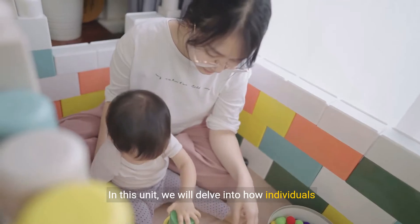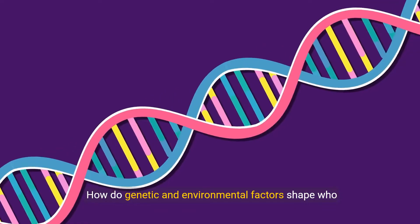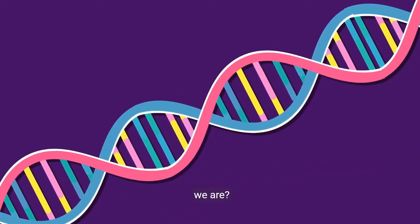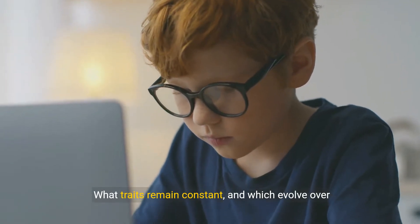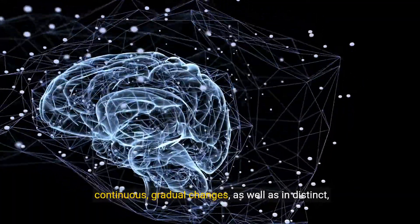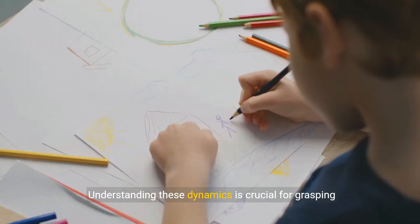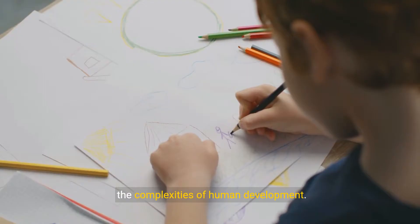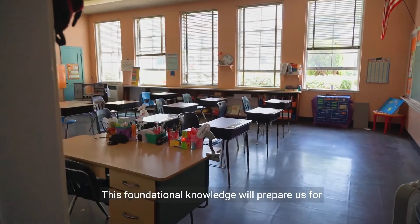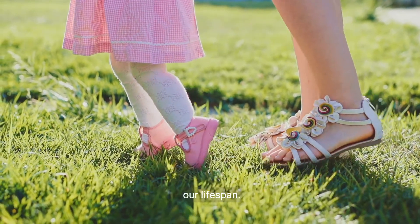In this unit, we will delve into how individuals change and grow throughout their lives. We'll explore the intricate balance between stability and change and engage in the age-old nature versus nurture debate. How do genetic and environmental factors shape who we are? What traits remain constant, and which evolve over time? We'll examine how development progresses through continuous, gradual changes, as well as in distinct, discontinuous stages. Understanding these dynamics is crucial for grasping the complexities of human development. This foundational knowledge will prepare us for deeper insights into how we, as humans, progress and adapt at various stages of our lifespan.